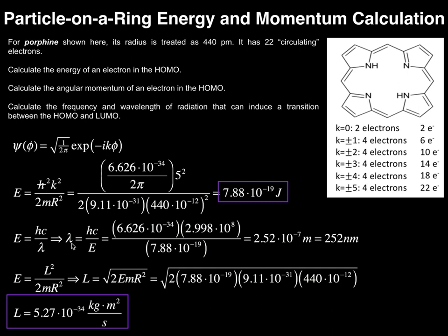We're looking for the wavelength of light, so let's solve for wavelength. Wavelength equals Planck's constant times the speed of light divided by energy. Planck's constant is 6.626 times 10 to the minus 34 joules seconds. C is 2.998 times 10 to the 8 meters per second. The energy we just calculated is 7.88 times 10 to the minus 19. When you calculate this, you find the wavelength is 2.52 times 10 to the minus 7 meters, which is 252 nanometers. If you took porphine and shone light with a wavelength of 252 nanometers, you would get promotion of an electron from the HOMO to the LUMO, theoretically.